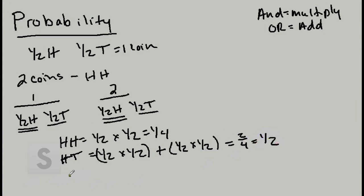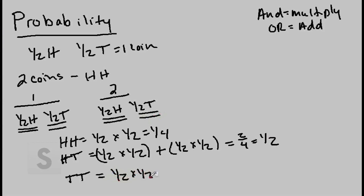Now let's work through the last example. The probability of getting two tails is one half for the first coin and one half for the second coin — one half times one half — which gives you one fourth.